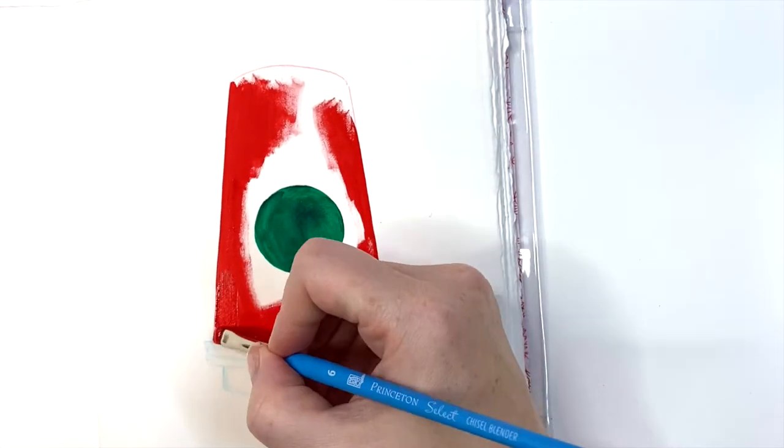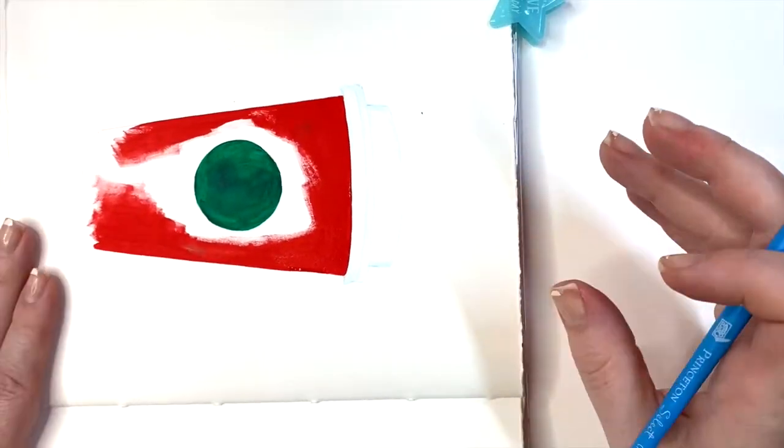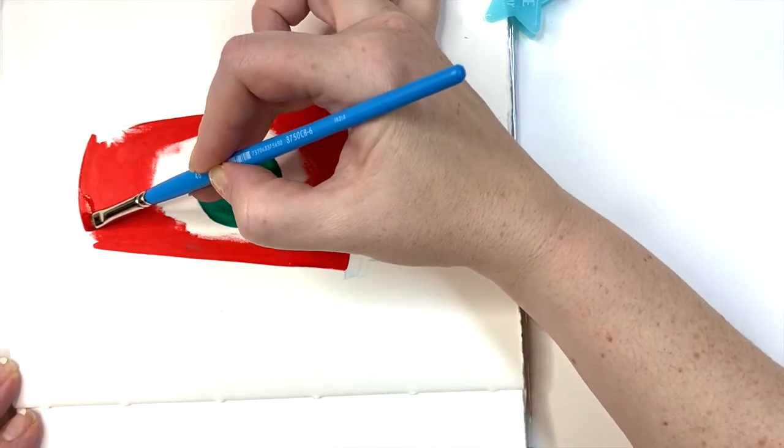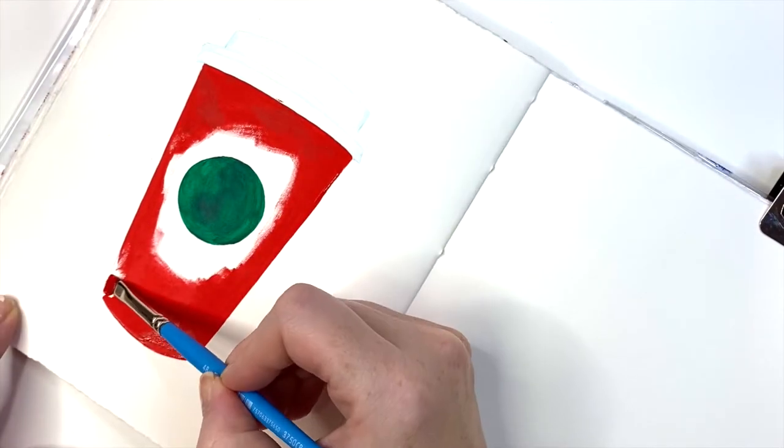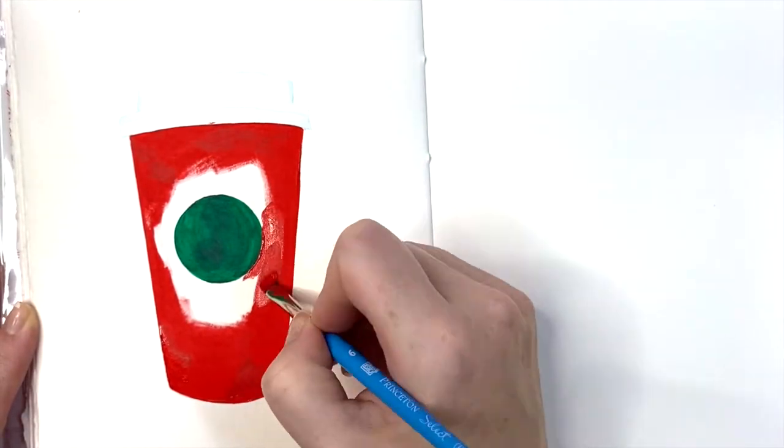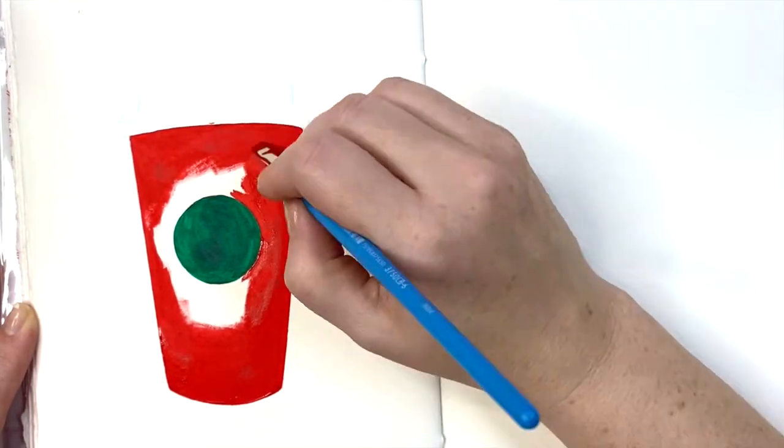Again, just paying attention to those straight edges and then blending inwards in the middle. I started with the outside and then I'm going to work my way in to the circle. Again, paying close attention to working and going slowly on my edges.